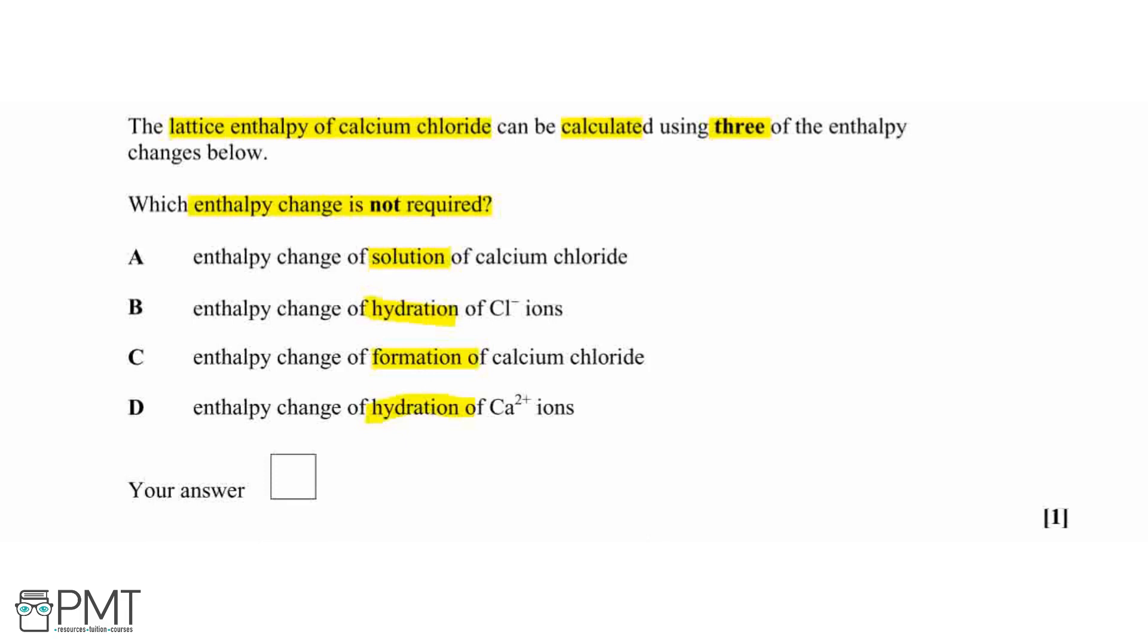So there are a couple of different ways that we can work out the lattice enthalpy of our ionic compound, and that's by using either a larger Born-Haber cycle or by using our solution-hydration Born-Haber cycle. So the larger Born-Haber cycle involves formation enthalpies, atomisation enthalpies, ionisation enthalpies, electron affinities, and so on and so forth.